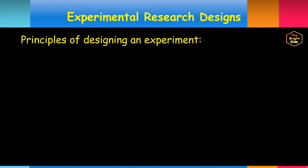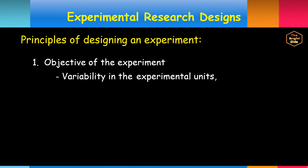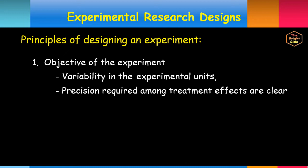Here are the principles you should follow when designing an experiment. You have to consider the objective of the experiment. There must be variability in the experimental units. Precision required in comparison to be made among various treatment effects must be very clear to the experimenter.